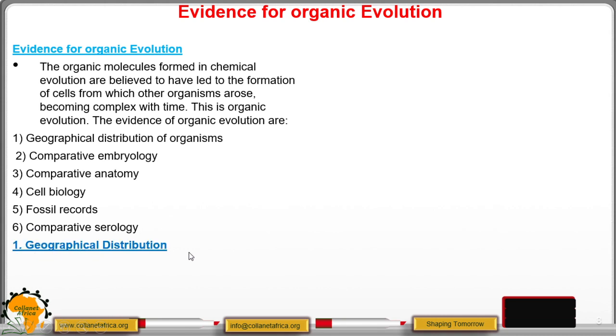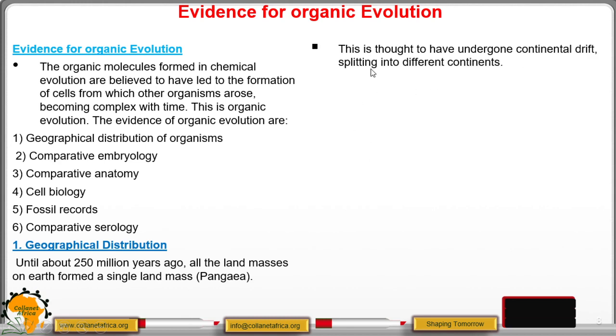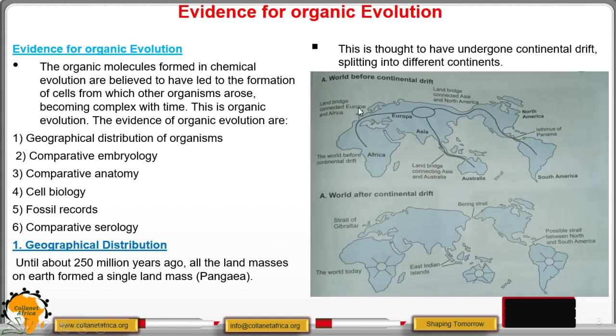Let us begin by looking at geographical distribution. It is believed that until about 250 million years ago, all the land masses on earth formed a single huge land mass called Pangea. And it is thought to have undergone continental drift, that is splitting into different continents. Here we have the world before continental drift. It was a single land mass connected all over. And there were diverse forms of life occupying these places.